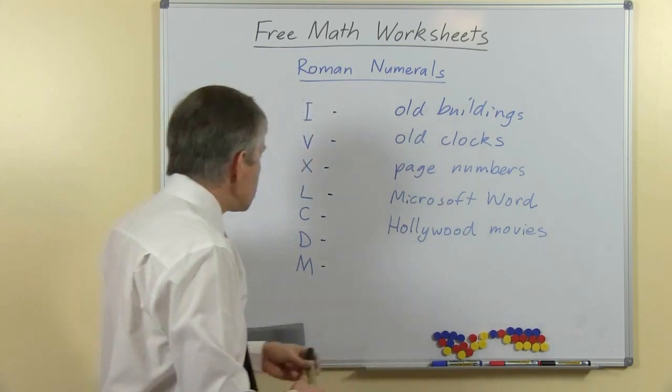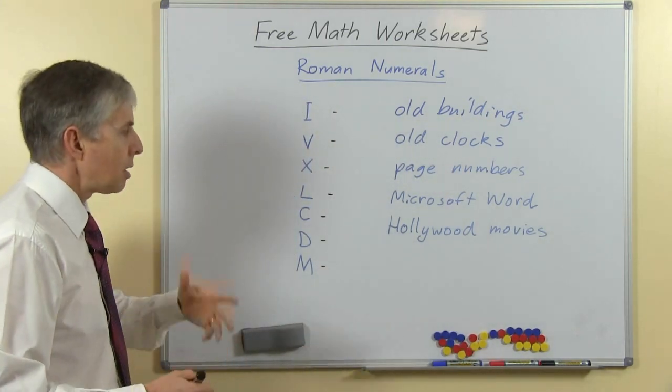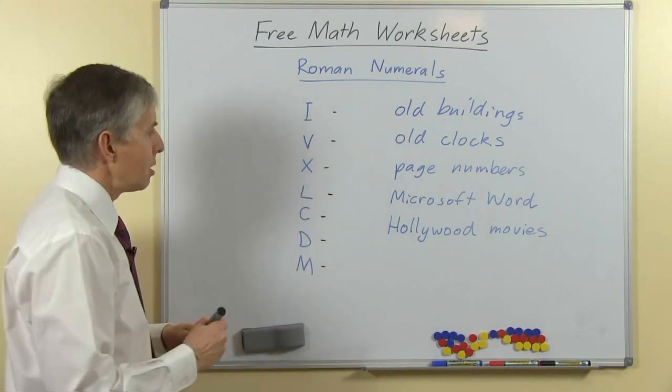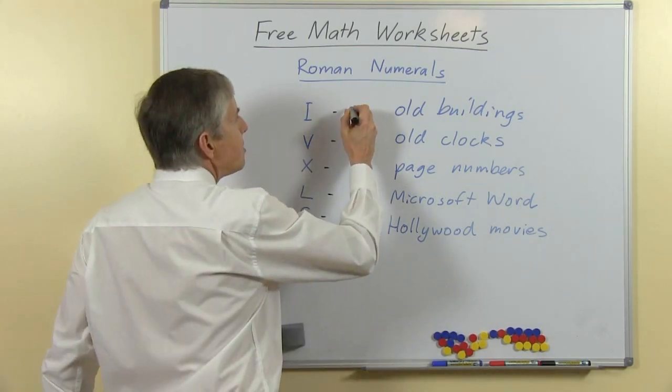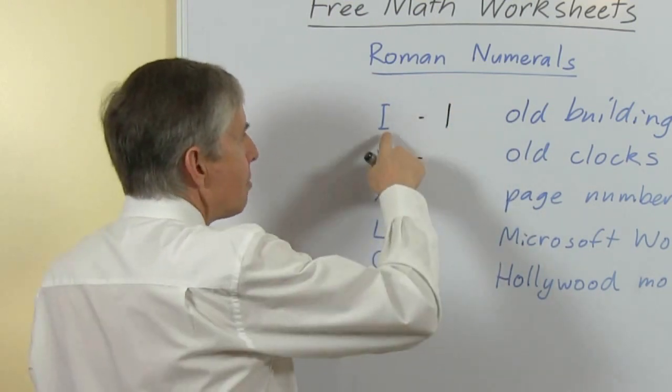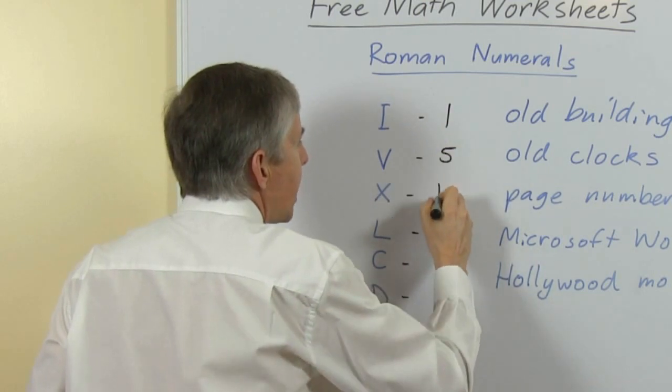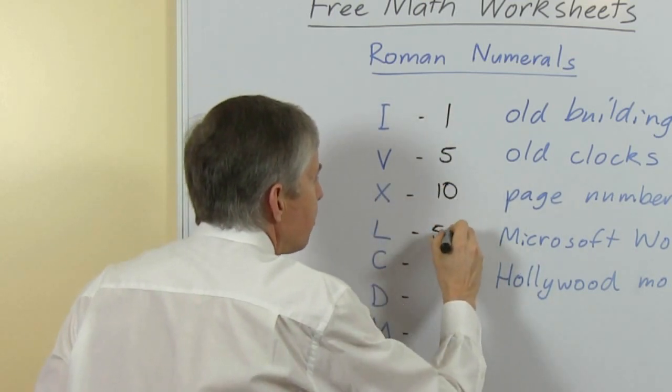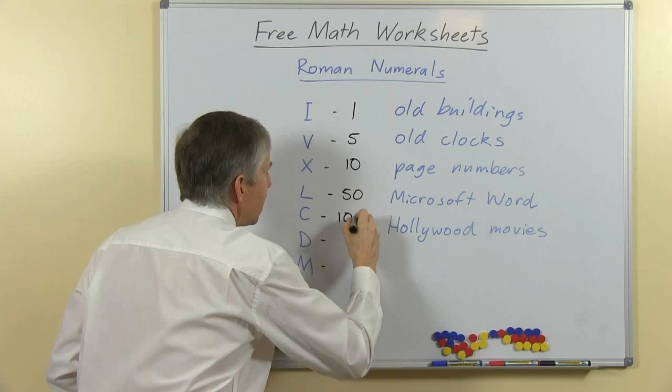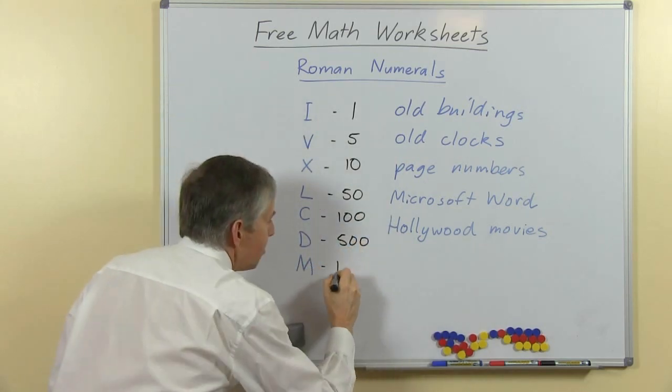So here are the symbols that they used. There were 7 of them that we still use if we want to use Roman numerals, and they have these values: I represents 1, which is nice and easy because they both look quite similar, V is 5, X for 10, L for 50, C for 100, D for 500, and you can probably guess the M is 1000.